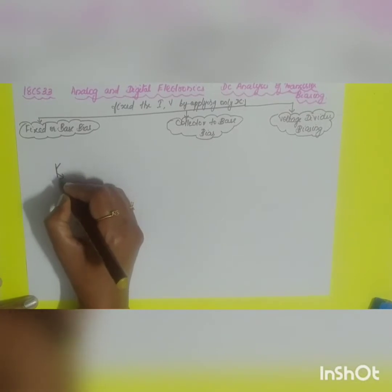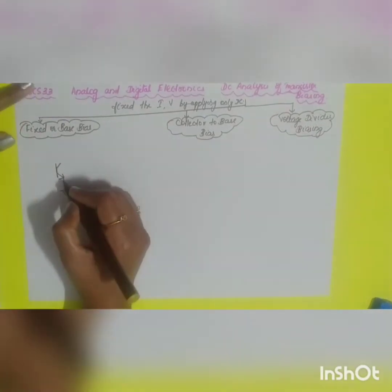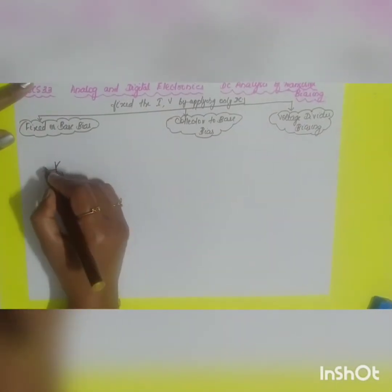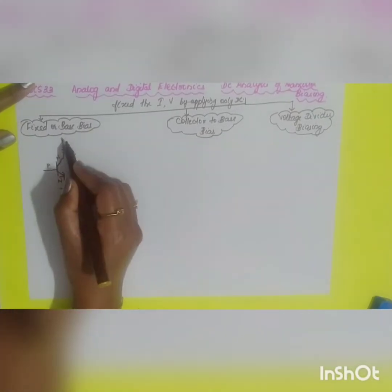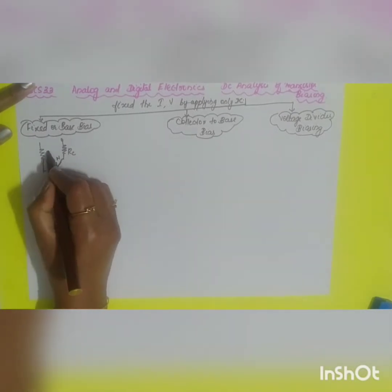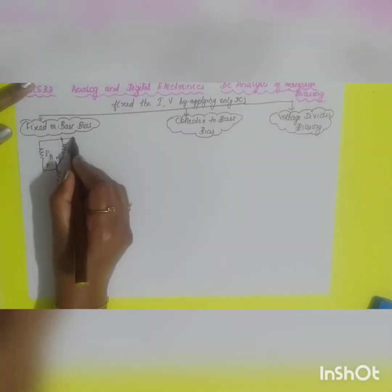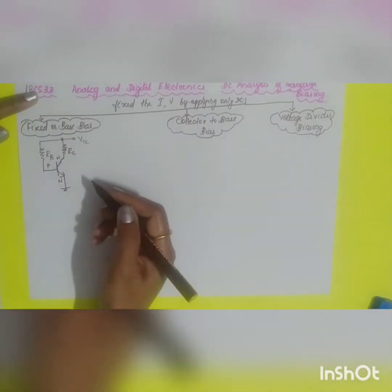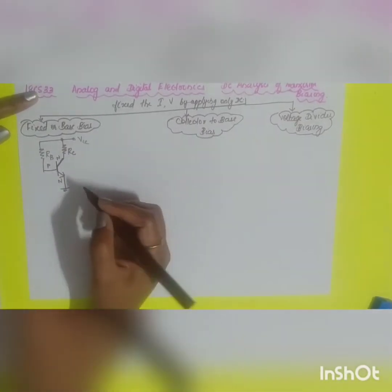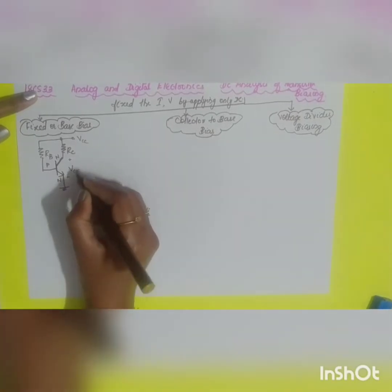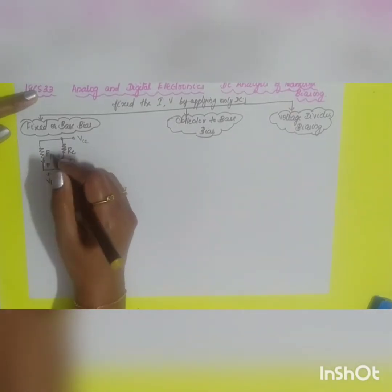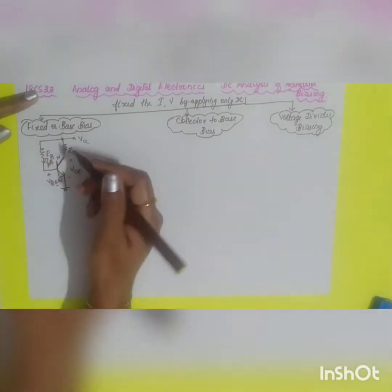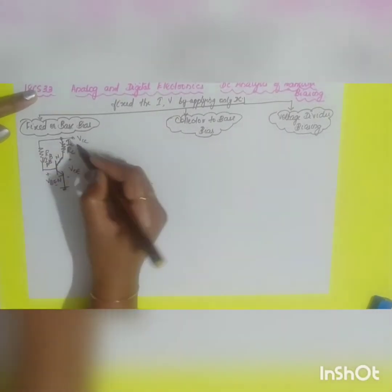For fixed or base bias, let me draw the diagram. This is an NPN transistor. Across the collector you have resistor RC, and across the base you have fixed resistor RB, both connected to VCC. The voltage VCE is across collector-emitter, VBE is across base-emitter, IB is the current through RB, and IC is the current through RC.